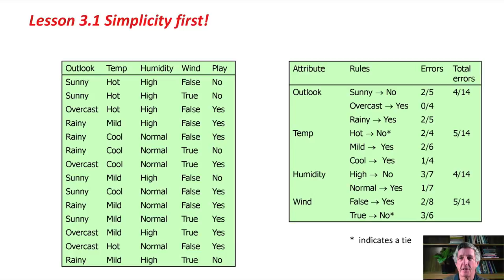We do the same for humidity and wind and look at the total error values. We choose the rule with the lowest total error value — either outlook or humidity. That's a tie, so we choose arbitrarily and choose outlook. That's how 1R works. It's as simple as that.